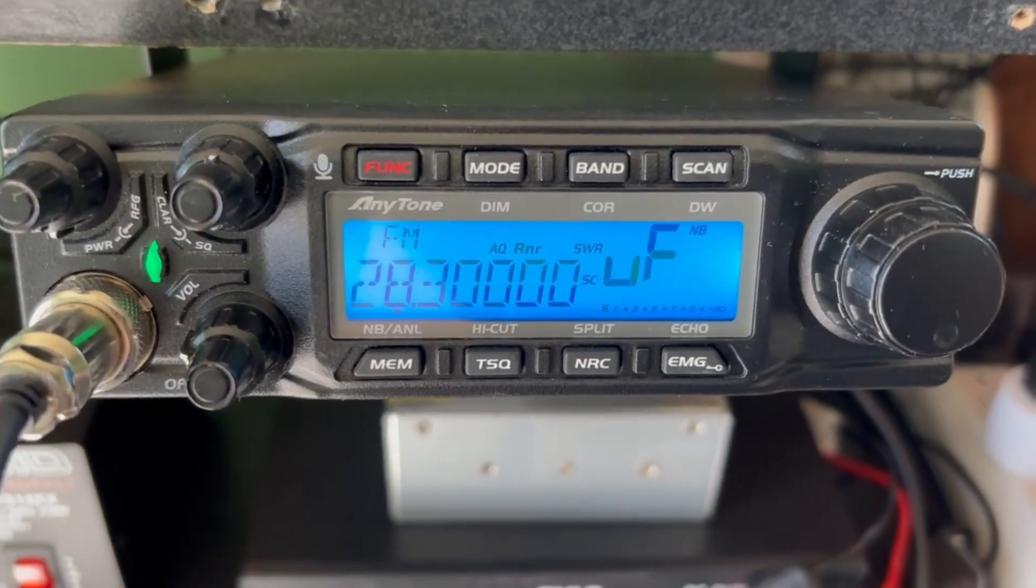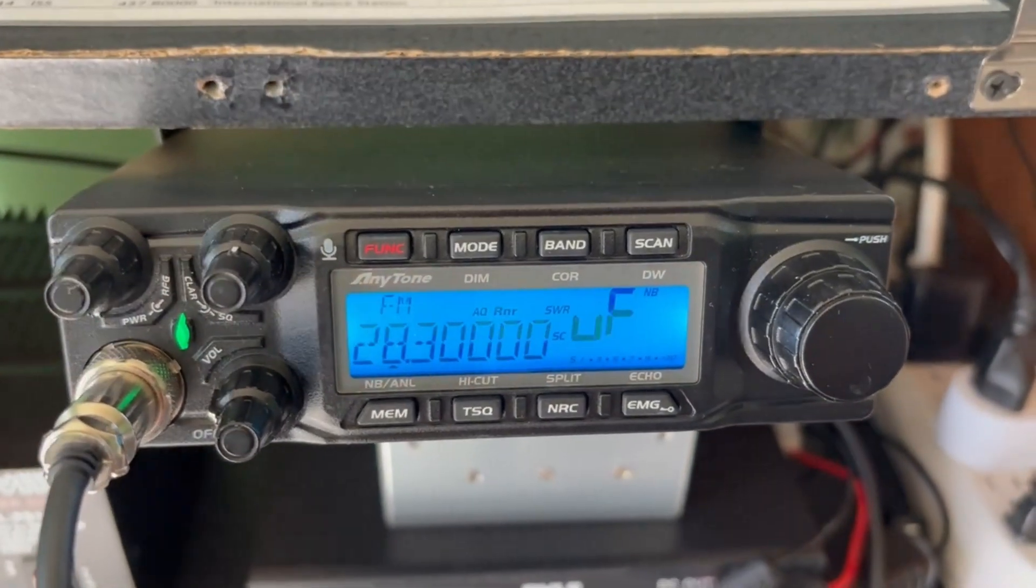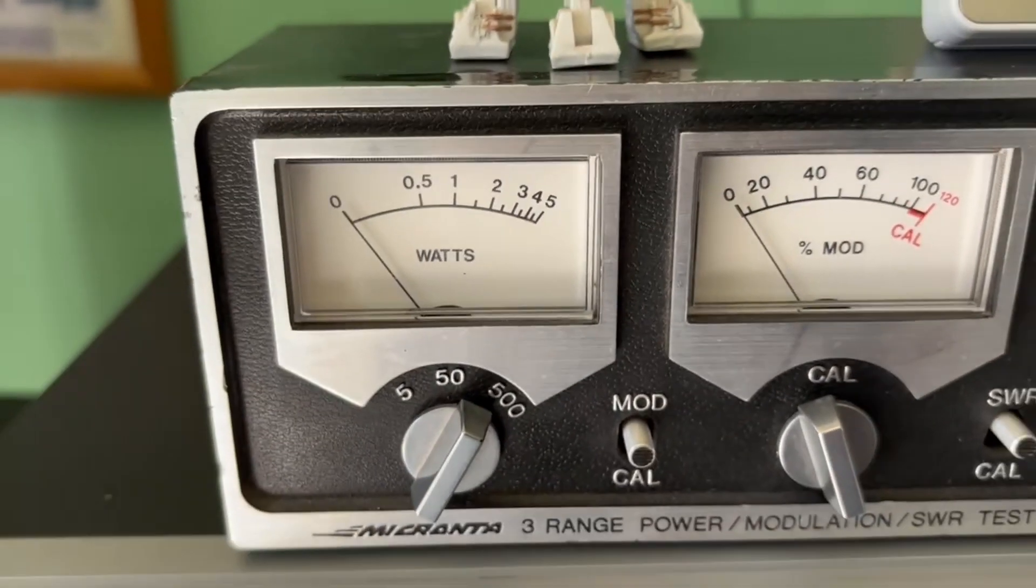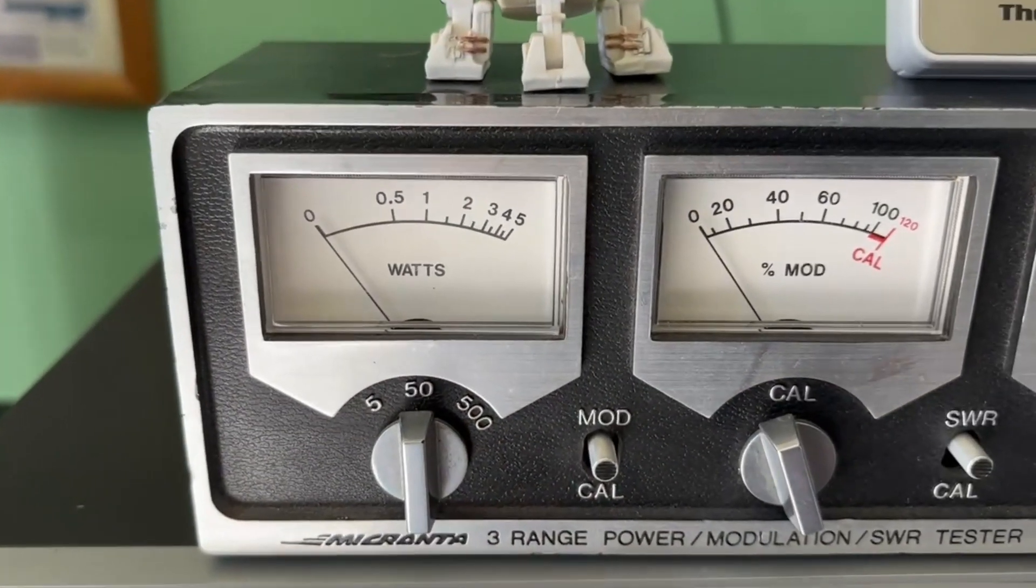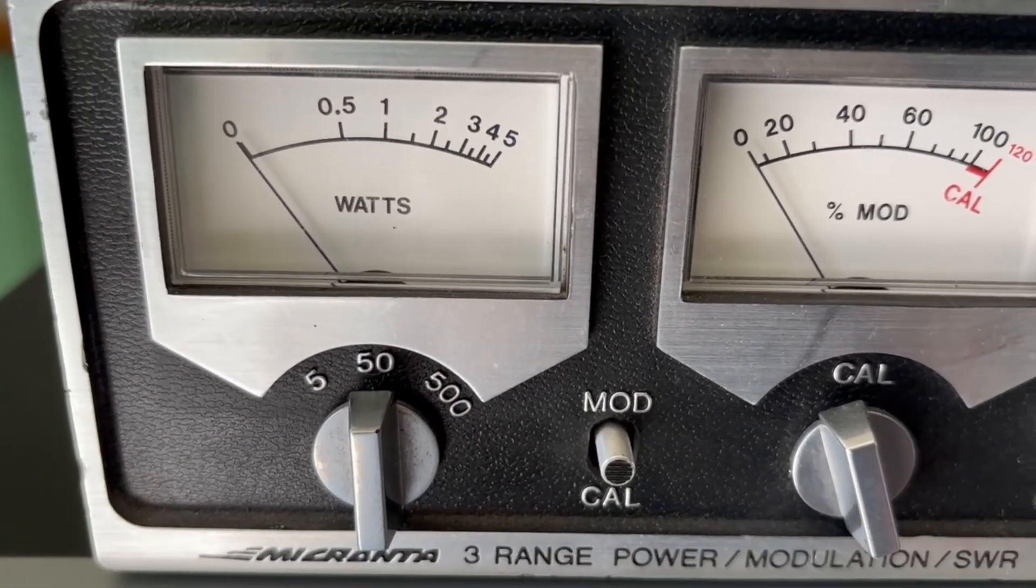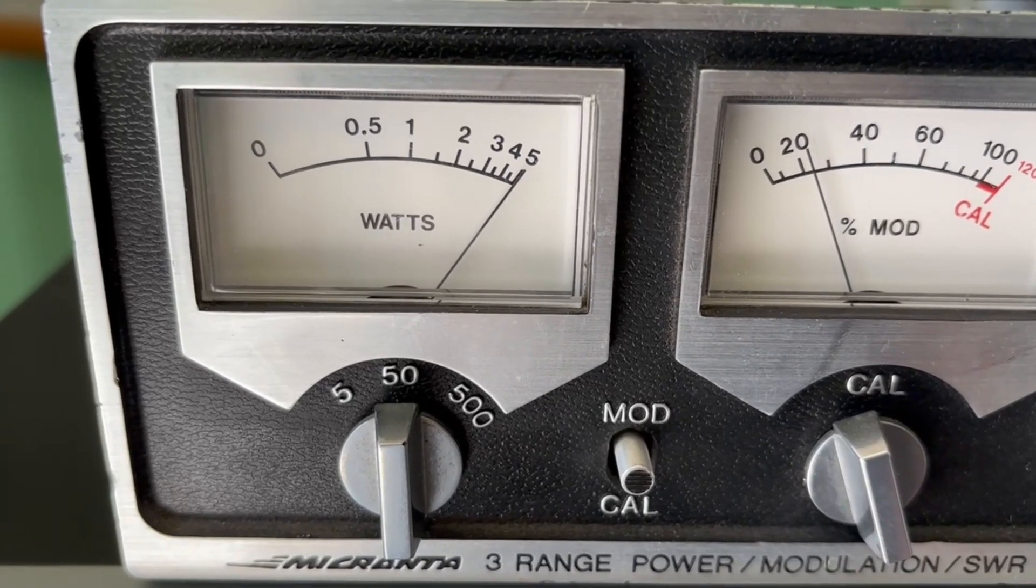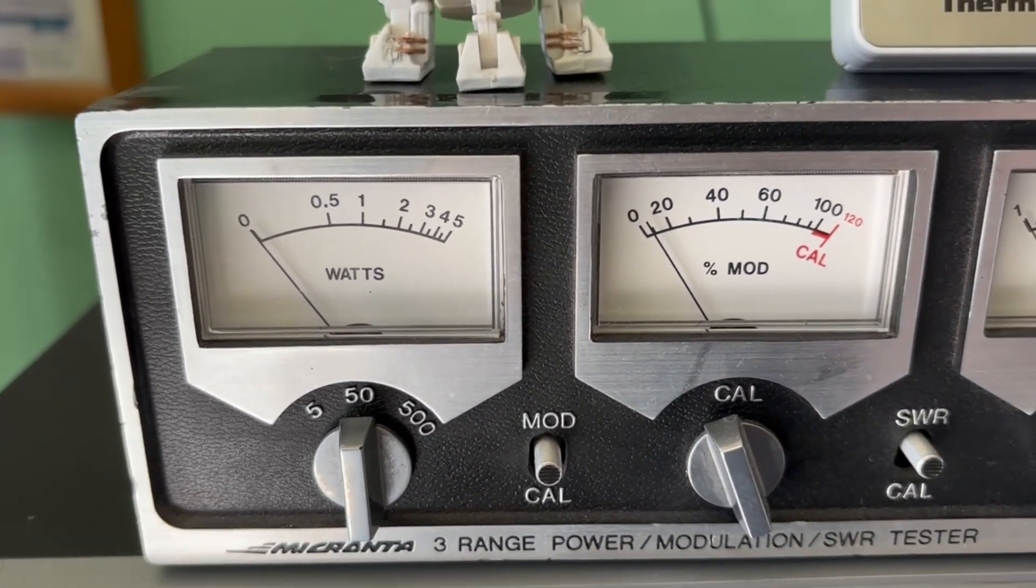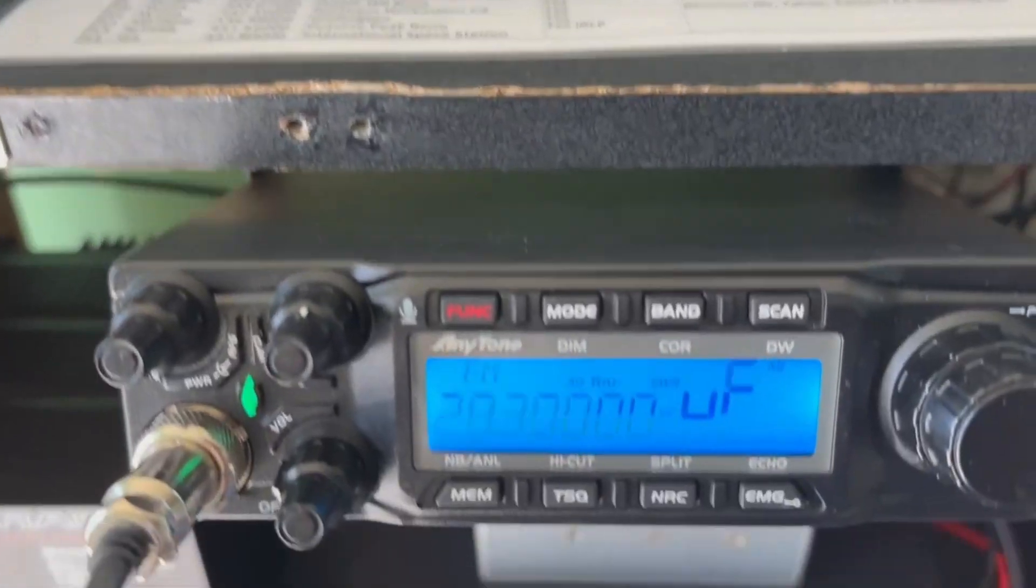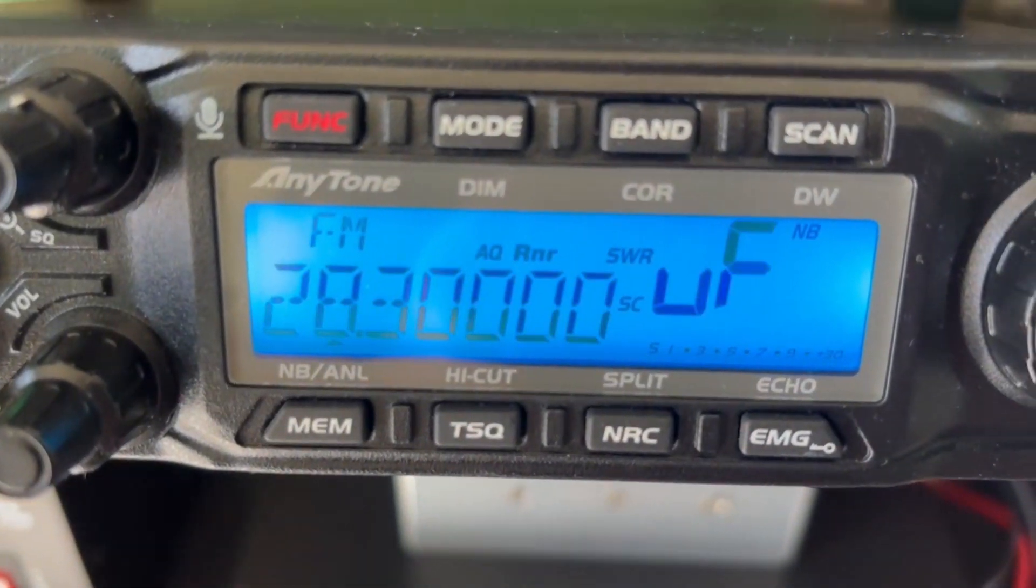According to our book on FM we should get 50 watts of power. So we'll go ahead and key the mic and let's look up at our meter here. Let's actually put it on the 50 watt scale, and we're getting right around 50 watts. If we look at the SWR on our radio, we're getting 1.1 on the dummy scale.